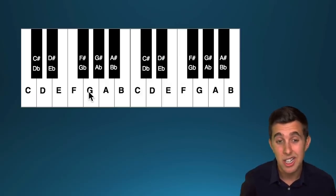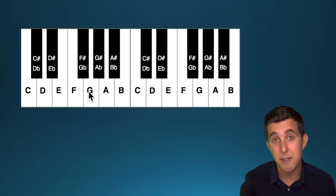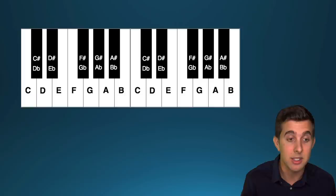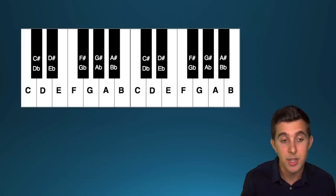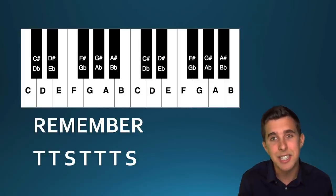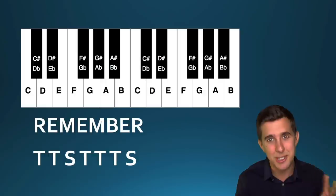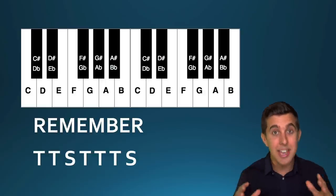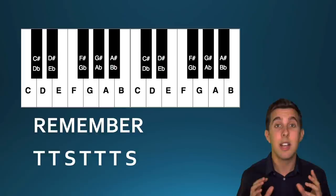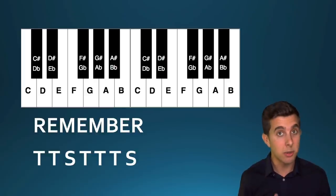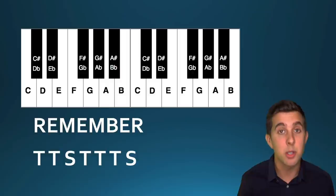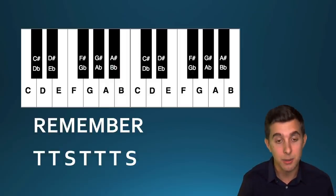It's called 'perfect' because it works in both major and minor. It sounds good. So if you're ever stuck, octaves, perfect fourths, and perfect fifths — that's how you can make stuff sound good. Remember tone, tone, semitone, tone, tone, tone, semitone. If you only remember one thing from this beginner's guide, just remember that pattern — it will allow you to work out any major scale.